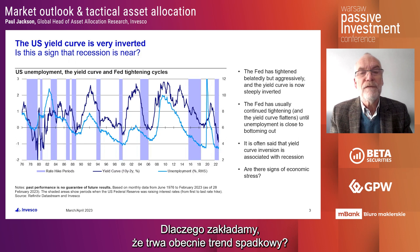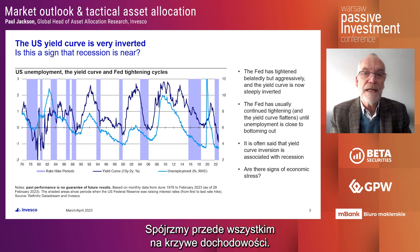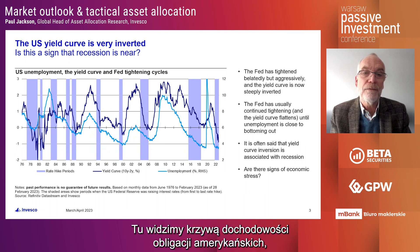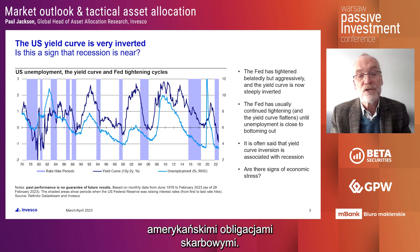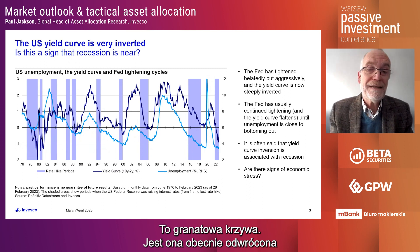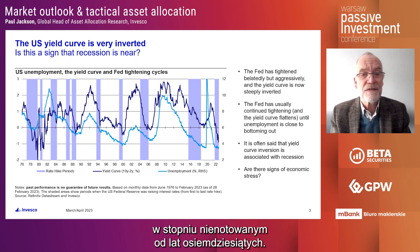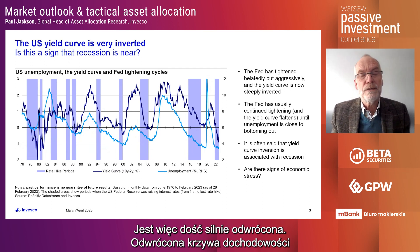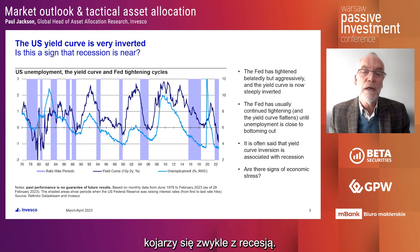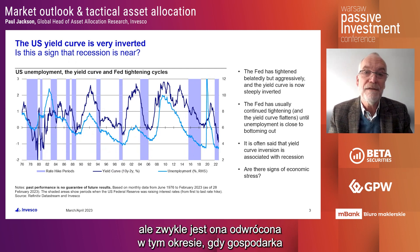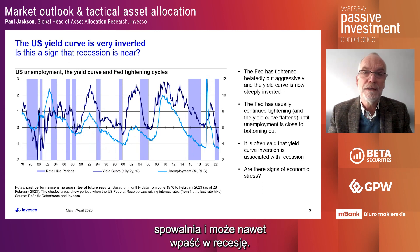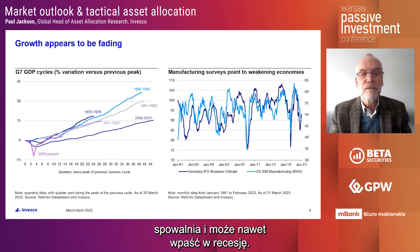Why would we believe that we're in this contraction phase? First of all, if you take a look at yield curves throughout the world — here I'm showing the yield curve in the US, the 10-year minus two-year yield curve for US Treasuries, that's the dark blue line — that is as inverted now as it has been at any time since the 1980s. So it's quite an extreme inversion, and usually we tend to associate yield curve inversion with recessions.